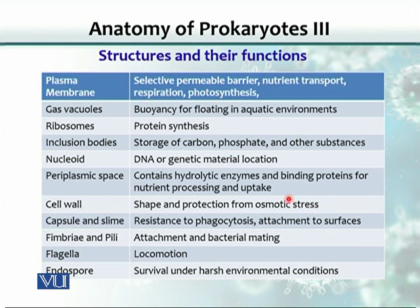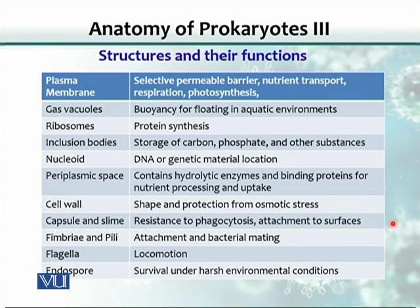If a bacterium sits in an environment where osmotic pressure is more or less than that inside the bacterial cell, the cell wall protects it from getting damaged. Capsule and slime provide resistance to phagocytosis. When bacteria invade the body and cause disease, they need to evade the cells of the immune system.